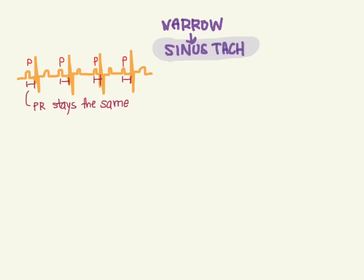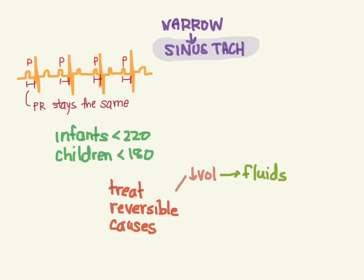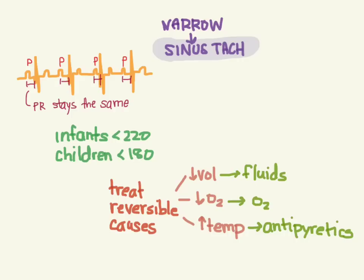Contrasting with SVT, sinus tach is not as fast. In infants the rate is usually less than 220, and for kids it's less than 180. The treatment is straightforward: treat the reversible causes. If they're hypovolemic or dehydrated, give them fluids. If they're hypoxic, give them oxygen. If their temp is up, give Tylenol. If they're in pain, give morphine. Treat whatever the reversible cause is for sinus tachycardia.